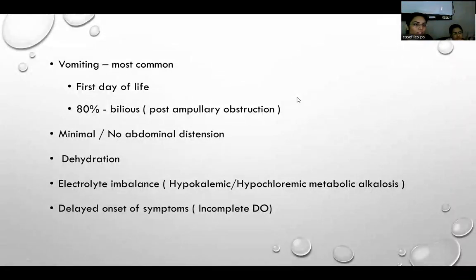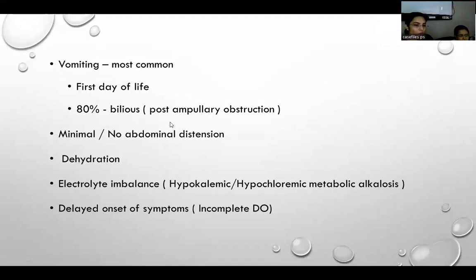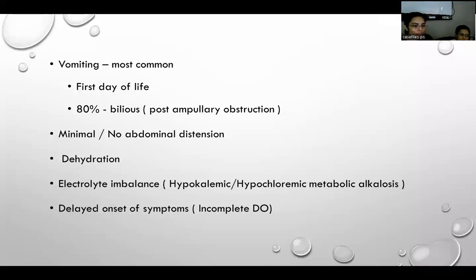Postnatally, the baby most commonly presents with vomiting, as the obstruction is very high in the GI tract, usually presenting on the first day of life. Since most are post-ampullary, bilious vomiting is common. There is no significant abdominal distension because of the upper tract obstruction. Babies also present with dehydration and electrolyte imbalance — hypokalemic, hypochloremic metabolic alkalosis. In incomplete obstruction, there may be a delayed onset of symptoms.